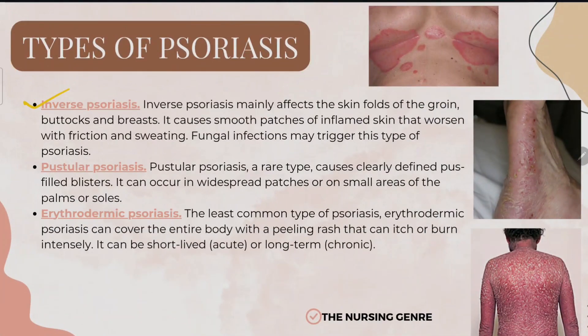Inverse psoriasis affects skin folds such as the groin and breast areas. It causes smooth patches of inflamed skin that worsen with friction and sweating. Fungal infections may also contribute to triggering this type.